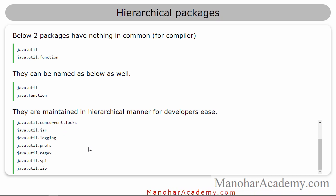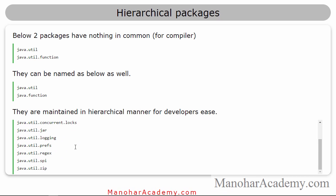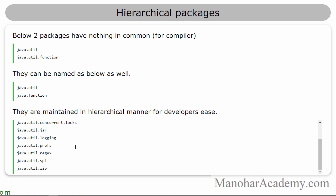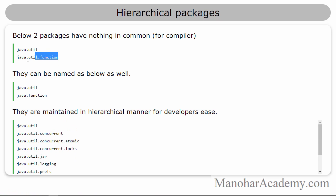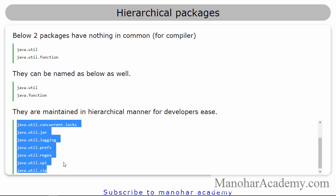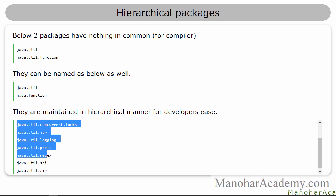There are many hierarchical packages in the Java API. For example, you can see there are many packages that all start with java.util because they are all providing some utilities. They are kept inside that package for that reason. The main point to remember is they have nothing in common for the compiler. Even though they are hierarchical, they have nothing in common — please remember that.